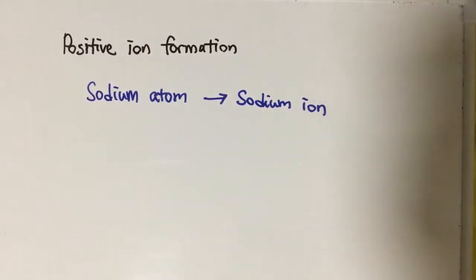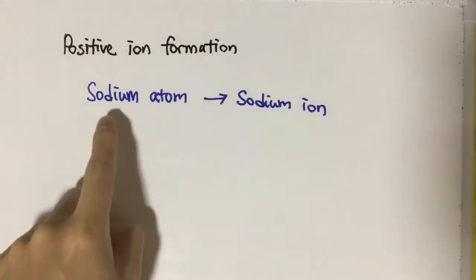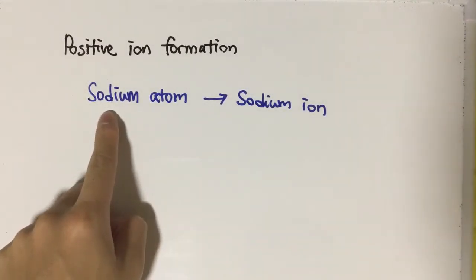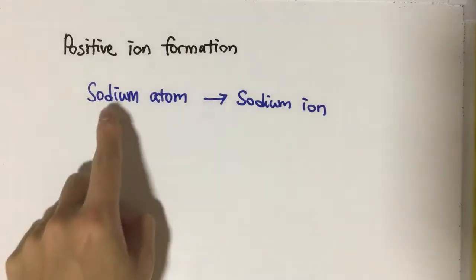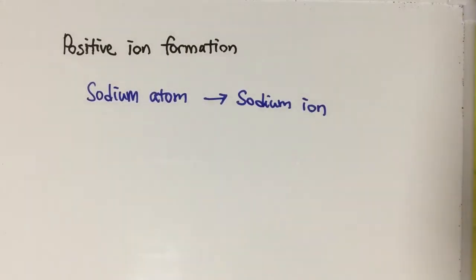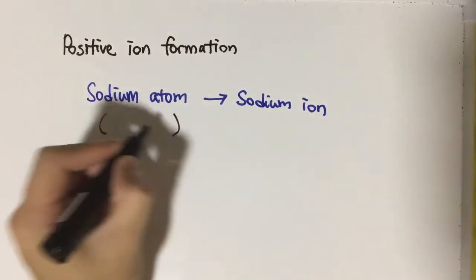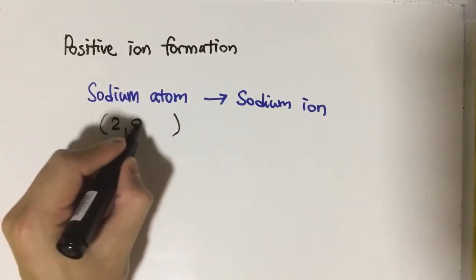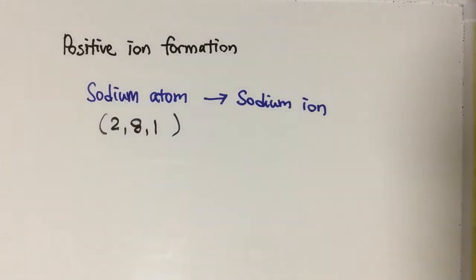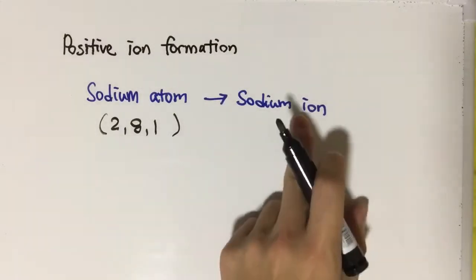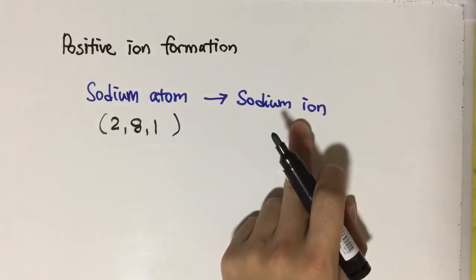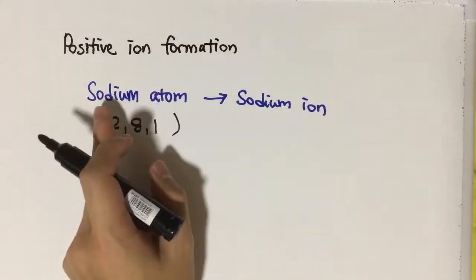Hi everyone. This video is about positive ion formation and I will use an example of sodium to illustrate. Sodium atom becomes sodium ion — let's see the electron arrangement of sodium atom. The electron arrangement of sodium atom is 2, 8, 1.